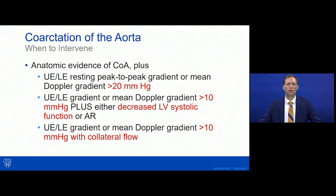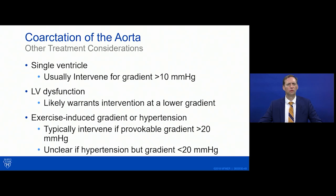What constitutes significant coarctation? A resting gradient of 20 mmHg or above from upper to lower extremities — by blood pressure or Doppler — in the setting of anatomic narrowing is significant. Even with a lower gradient, decreased LV systolic function, aortic regurgitation, or significant collateral flow may indicate a significant coarctation deserving attention. Less-defined situations include single ventricle physiology, borderline LV dysfunction, and exercise-provoked gradients.